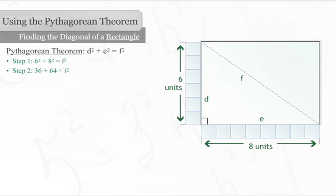If we calculate 6 squared and 8 squared, we have 36 plus 64 equals f squared. 36 plus 64 equals 100. So, f squared equals 100.